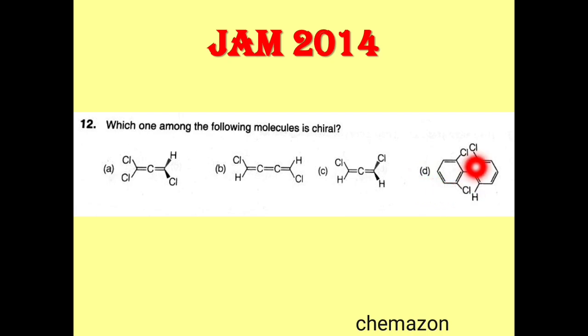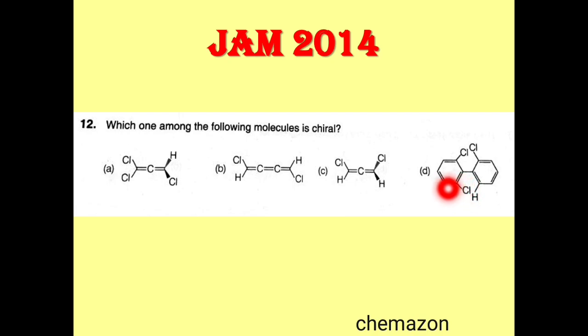In option D, two ortho positions are similarly substituted with chlorine atoms, so a plane of symmetry passes through this molecule making it achiral. Therefore, the correct answer for this question is option C.